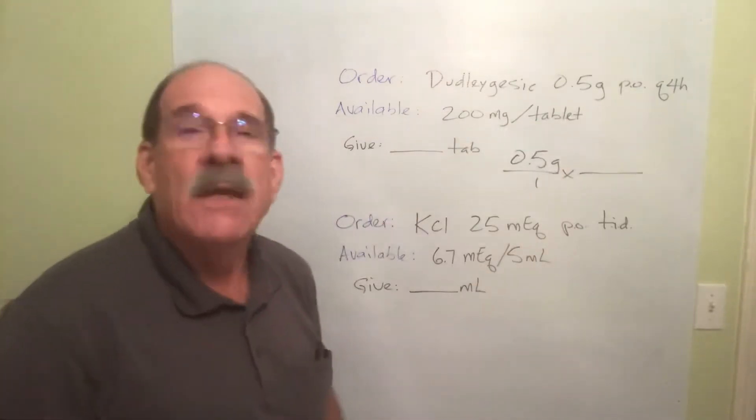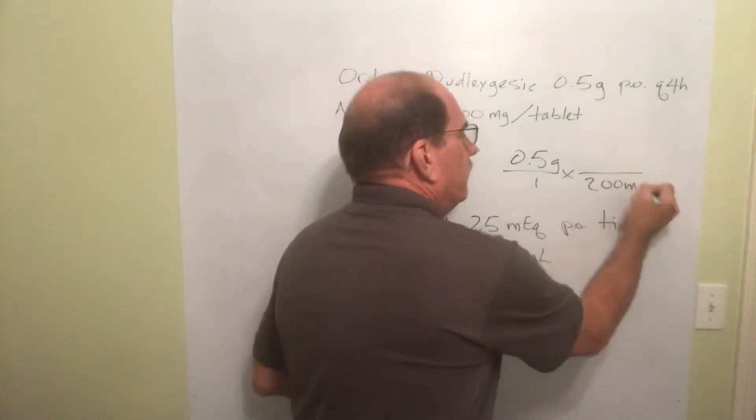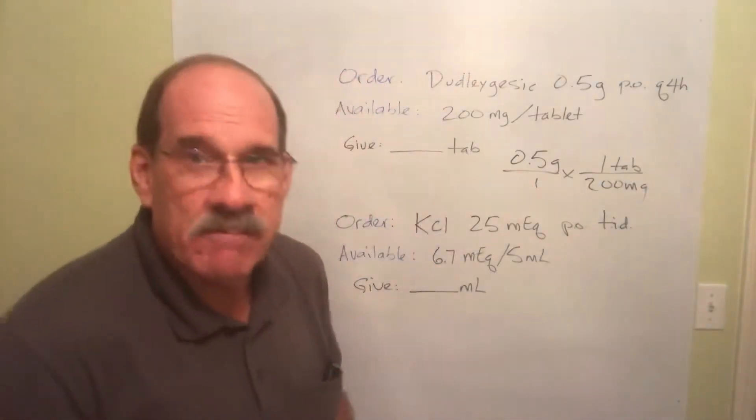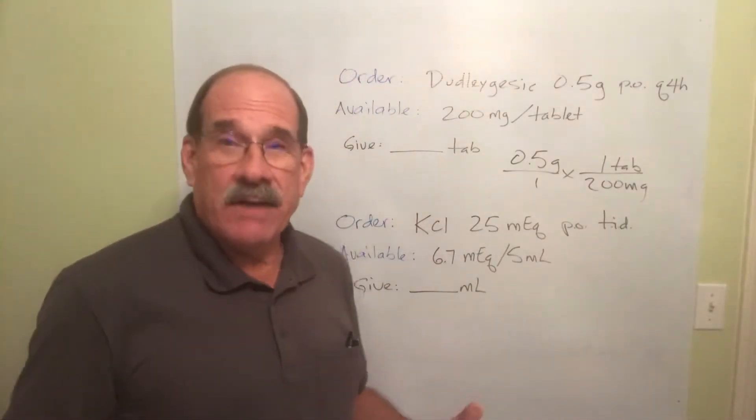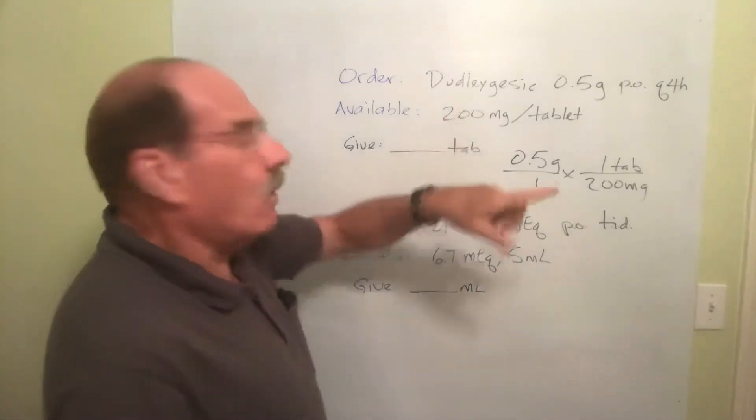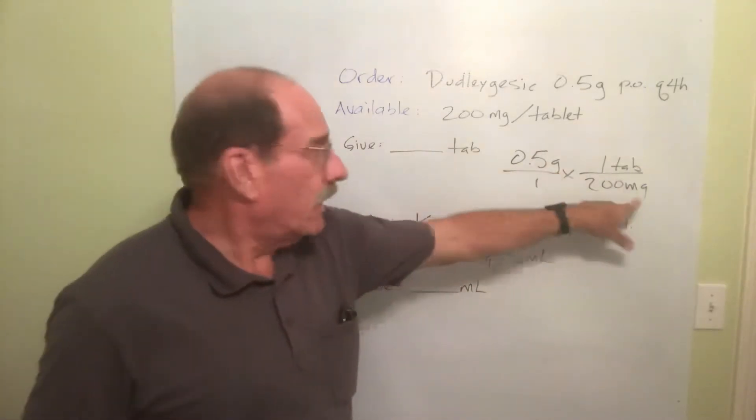So write that down from bottom to top. I have 200 milligrams in every one tablet. You're getting the pattern down I hope. If you're not, you're not paying attention to your teacher. Oh I can't cancel because that's grams and that is milligrams.